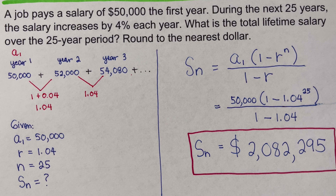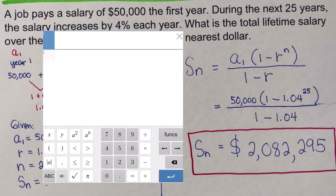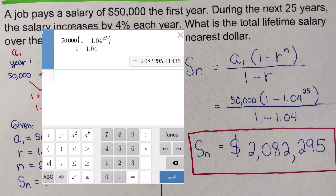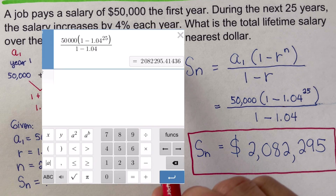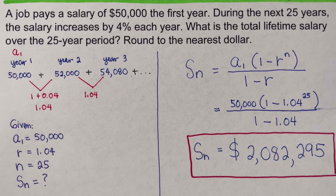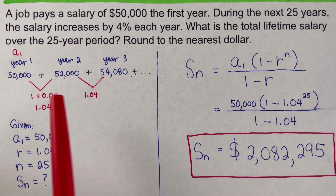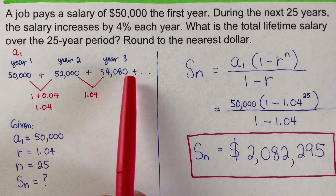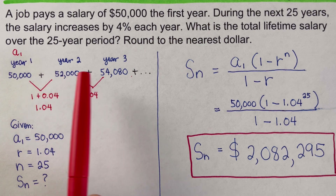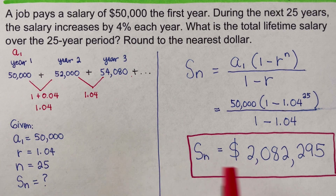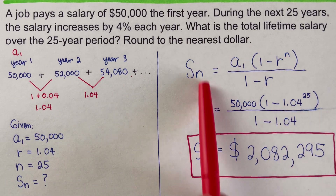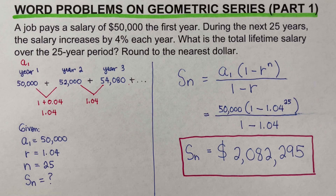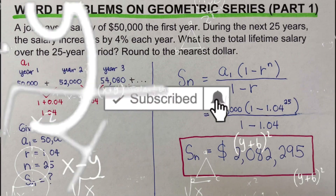You can also use the Desmos calculator on your phone or Chromebook — the answer is still $2,082,295. This value represents the sum of all salaries from year one through year 25, each multiplied by 1.04, added together. Instead of doing all that work manually, we use the formula to get the sum directly. If you find this video helpful, hit like and subscribe for more math videos!